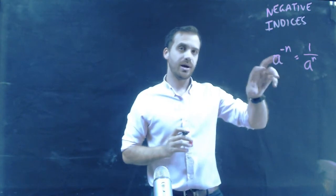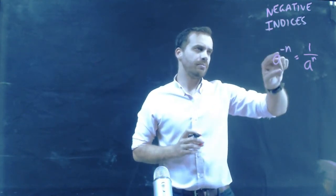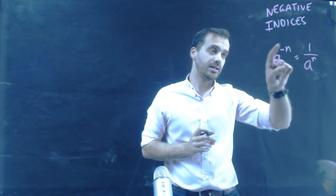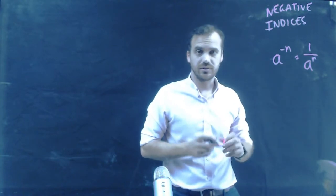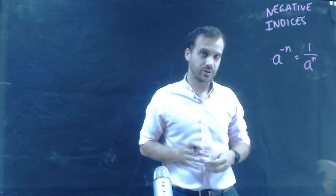Basically, what it's saying is a to the power of negative n, that's on the top of a fraction at the moment, but that can go to the bottom of the fraction, and the negative indices will become a positive indices. Very straightforward. Not too much difficulty here. Let's take a look at a few examples.